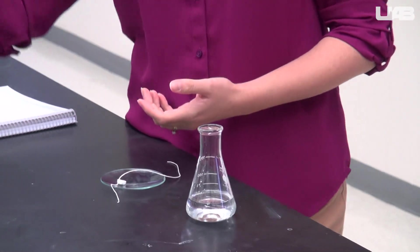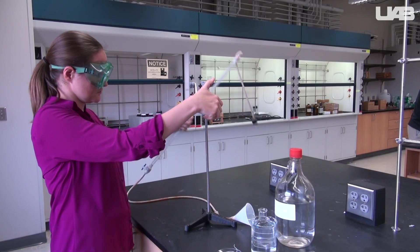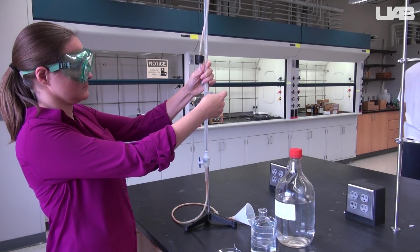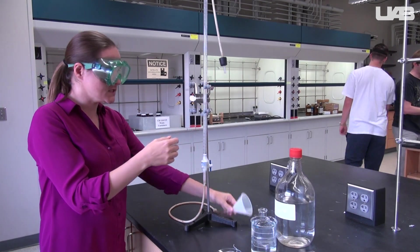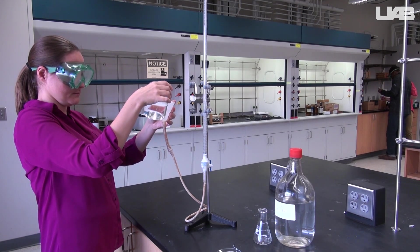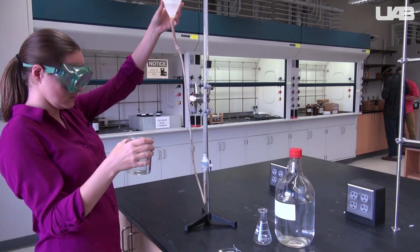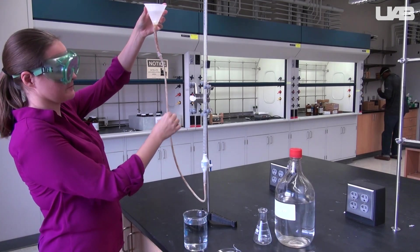You will also need an Erlenmeyer flask with some acetic acid solution. Now you need to set up the constant pressure gas volume apparatus. Clamp the burette portion to the ring stand like you do when performing a titration. You will fill the burette with water by pouring water into the funnel, then lifting the funnel. The water will flow into the burette as long as you have the funnel above the level of the water in the burette.